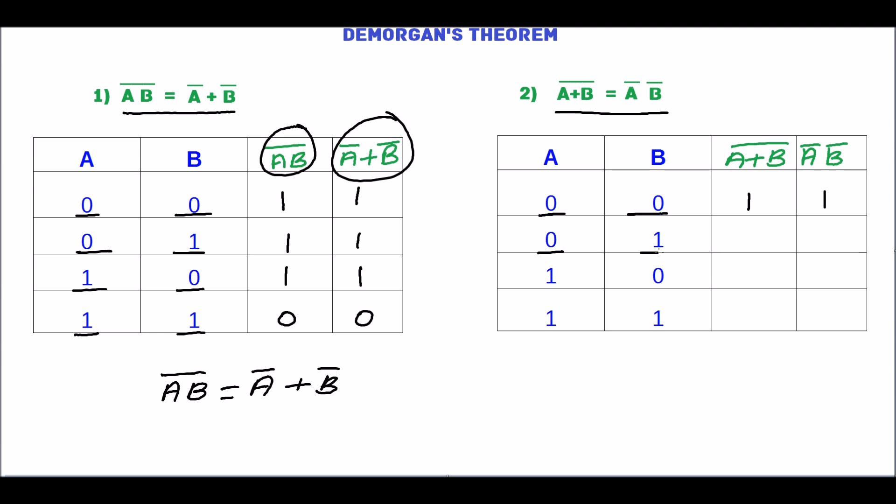For A=0, B=1: A plus B is 1, and 1 complement is 0. A complement is 1 and B complement is 0, so A complement into B complement is 0.